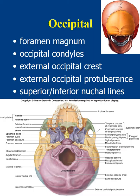The external occipital protuberance is the big bump felt in the back of the head. The external occipital crest projects posteriorly from the foramen magnum and ends at the occipital protuberance. The superior and inferior nuchal lines are intersections of the external occipital crest at horizontal ridges, and they are important for attachments of ligaments and neck muscles. Males tend to have larger occipital protuberances and larger nuchal lines due to larger muscle and ligament attachments.